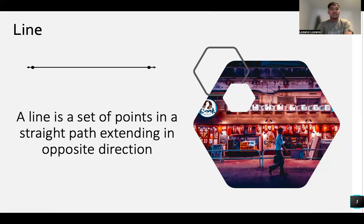Next, we have line. So a line is a set of points. Set of points, ibig sabihin pinagsama-samang points in a straight path extending in opposite direction. So unending. Pag sinabing line, unending. Walang katapusan. So makikita niyo, may arrow sa magkabilang dulo. So it means this is the line at hindi ito natatapos. Pwede yung humaba both side. Unending siya both side. So this is what we called line.